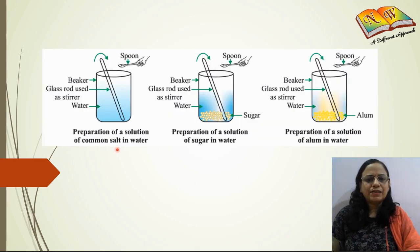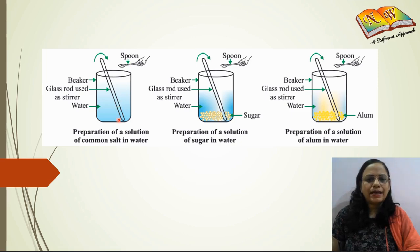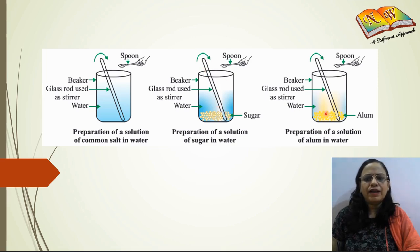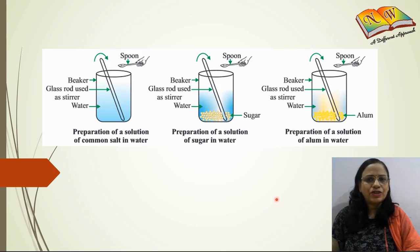In the first part of the experiment, we will take three beakers and add some water to all three. In the first beaker we will add some salt and dissolve it with the help of a glass rod. In the second beaker we will put some sugar and dissolve it. In the third beaker we will add some alum and dissolve it with the help of a glass rod. Let us do this now and see what observations we get.